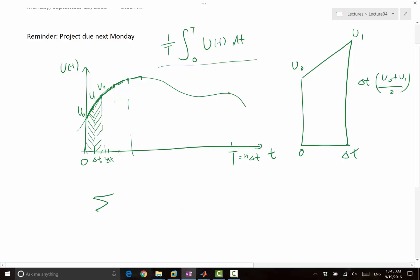It's basically a summation. You can pull delta T out. But it's going to be a summation of i goes from 1 to n of Ui minus 1 plus Ui over 2. So that's a very good approximation of this integral.